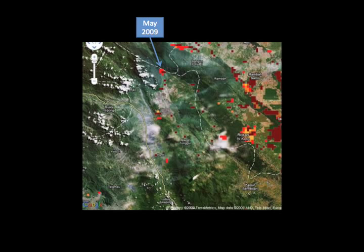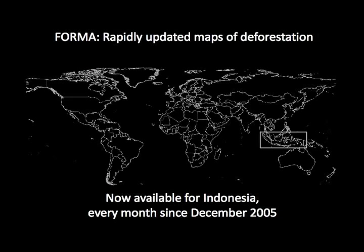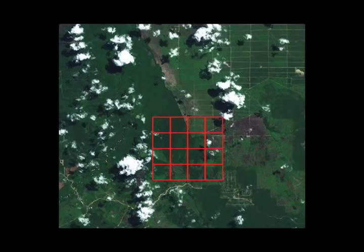It currently identifies deforested areas in Indonesia for each square kilometer of forest, or about one-third of a square mile, each month since the end of 2005. We are currently extending FORMA to the rest of the tropics and exploring improving the resolution to 250 meters.